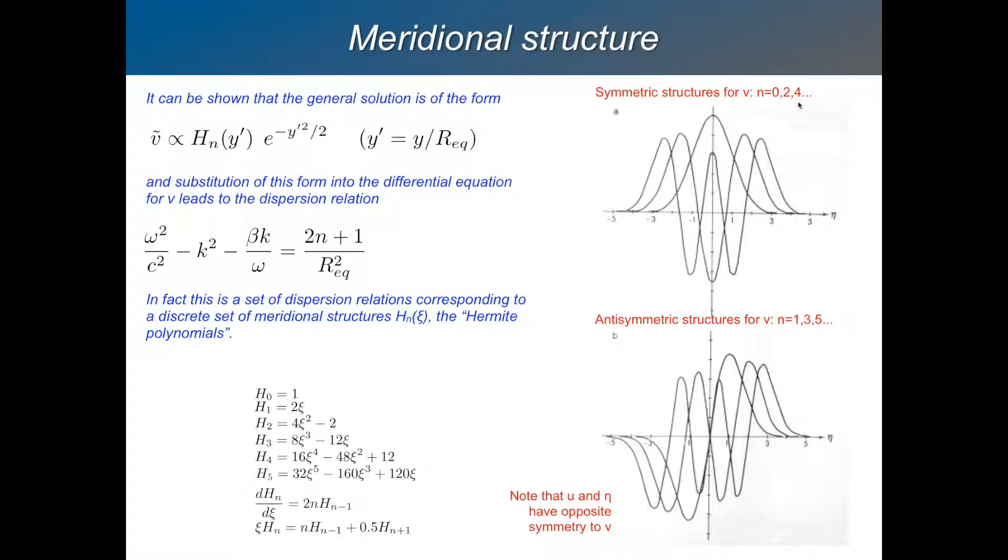So for n equals 0, 2 and 4, even numbers of n, v is symmetric. This expression here will be symmetric about the equator. So you have 0 here. And then you've got one here which has a single wiggle in the middle. One here which has two wiggles in the middle. They're all symmetric about the equator. So y positive here, y negative here. And then this is the anti-symmetric set. So these are for odd values of n and you have something which changes sign across the equator with the increasing number of wiggles as it goes depending on the value of n.